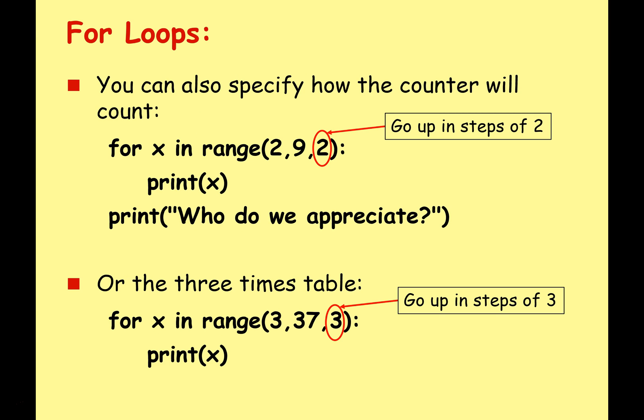We can also specify how much the counter will count. When it's going up or even if it's going down, it doesn't have to do it one at a time. It can do it in larger or smaller steps. Here we've got for x in range 2 comma 9 comma 2 print x. What's that going to do? It's going to start at 2, it's going to keep going until it gets to 9, and it's going to do that in steps of 2. So it's going to go 2, then 4, then 6, then 8, and then it's going to stop and print 'who do we appreciate'.